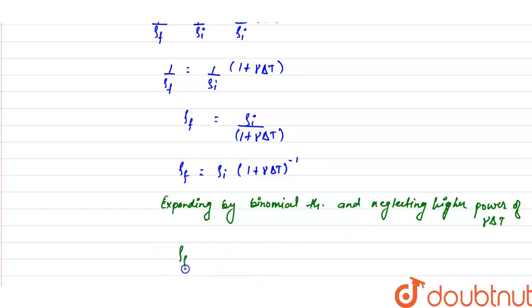So we get the relation of density as density final is equals to density initial into (1 minus γΔT).